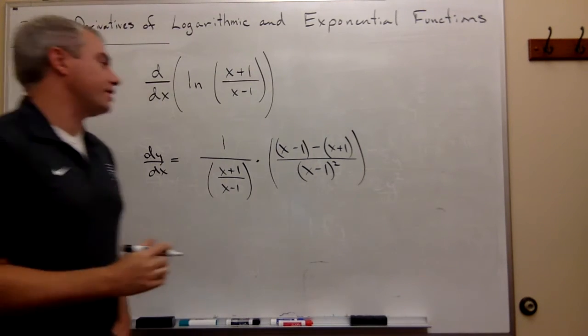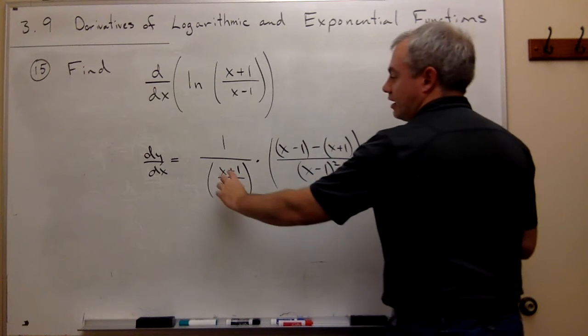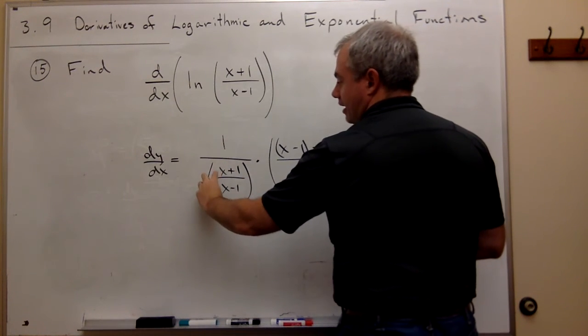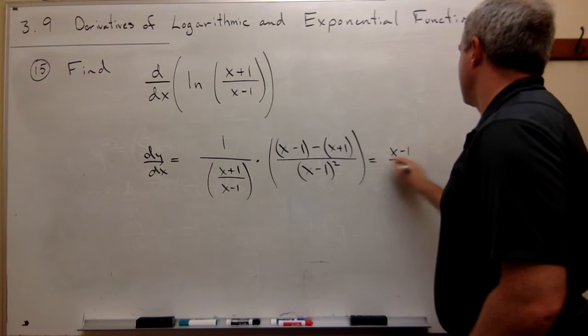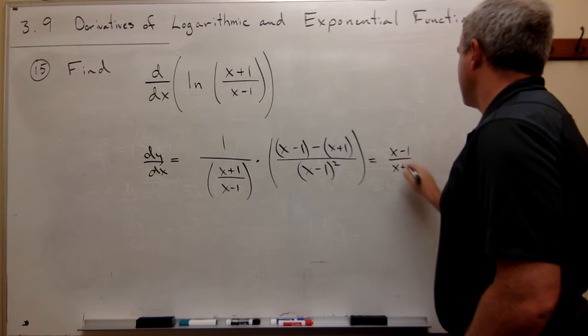Now we could clean this up a little bit. If I flip and multiply here, this (x+1)/(x-1) becomes (x-1)/(x+1).